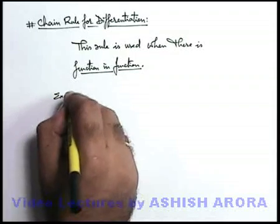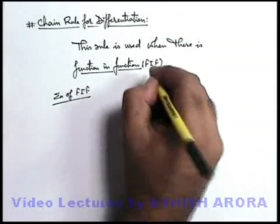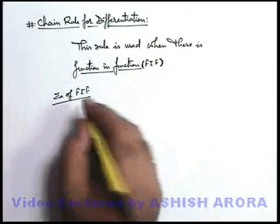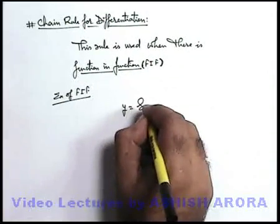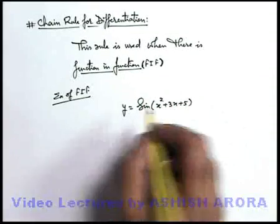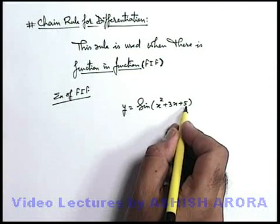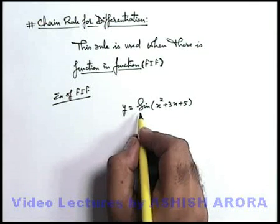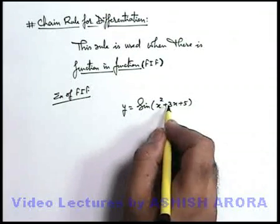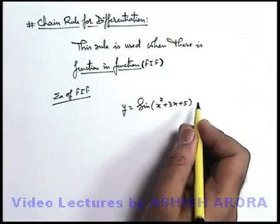For example, cases of function in function — just by looking at which we'll be able to recall that we are required to use chain rule. Say, for example, you are given with y = sin(x² + 3x + 5). Here you can see that the primary function is a trigonometric function, but in its argument we are having another function. Till now we have studied that for trigonometric functions it is y = sin(x), where the argument is just a variable.